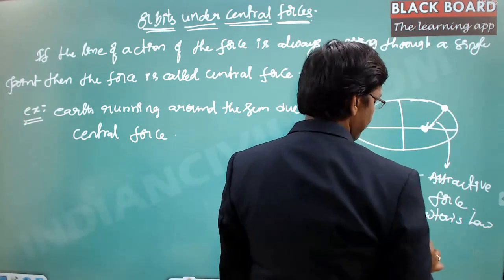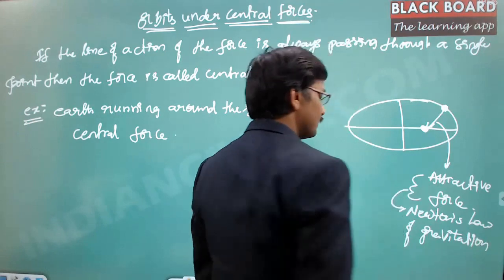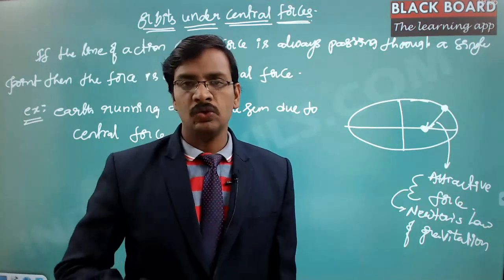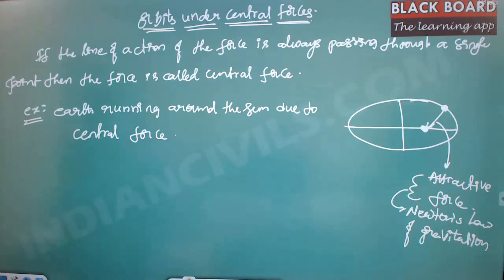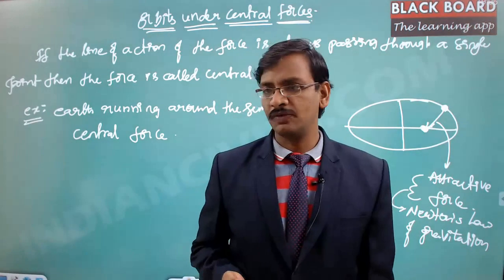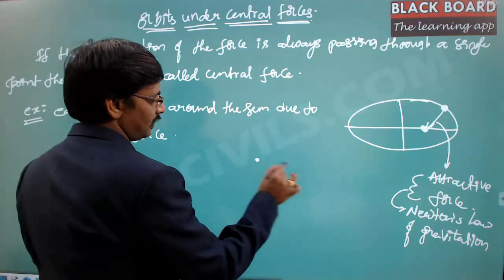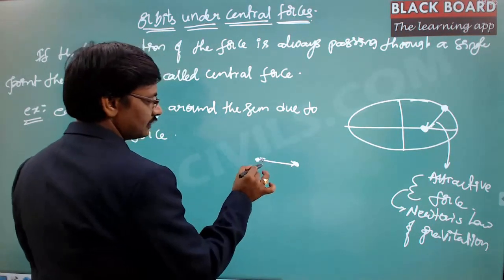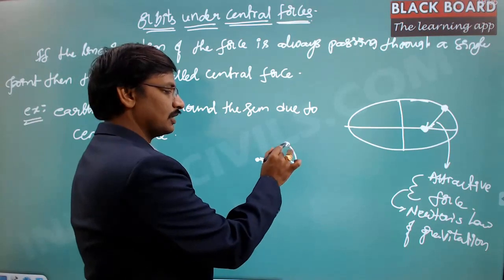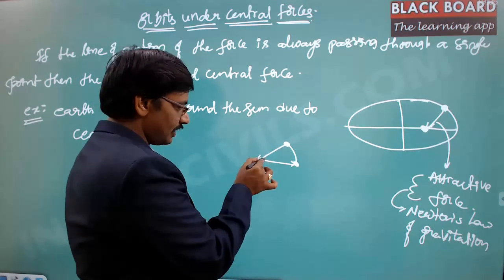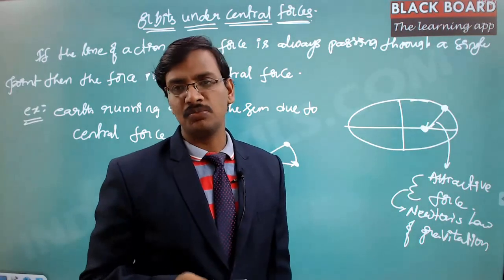Newton's law of gravitation states: whenever there are two masses, those two masses will always attract each other. Any force is not necessarily a central force. The central force comes into picture if there is a moving object. If it is an attractive force and the Earth moves from one location to another, the attractive force is still directed toward the same point — that is called a central force. The central force comes into picture only when there are moving objects.